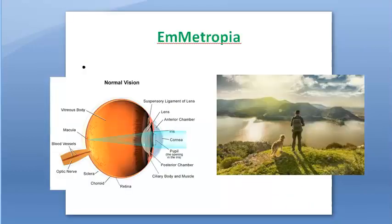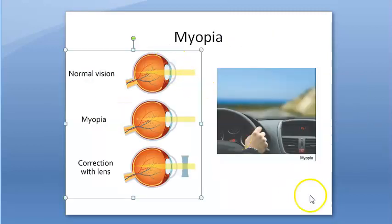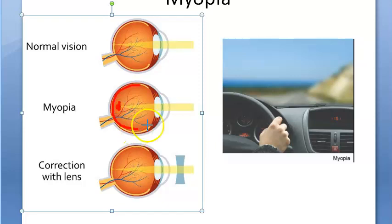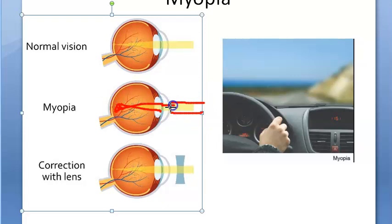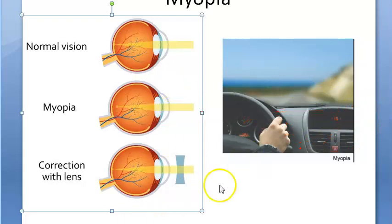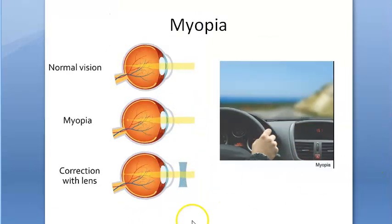In refractive errors, myopia means the image is formed in front of the retina. Whatever is coming from infinity - distant vision - it is focusing in front of the retina. So this is myopia: short-sightedness. You can see things nearby but not far away. They usually correct this with a concave lens.